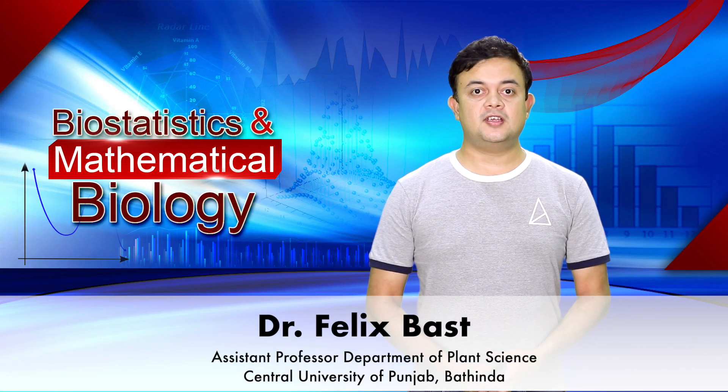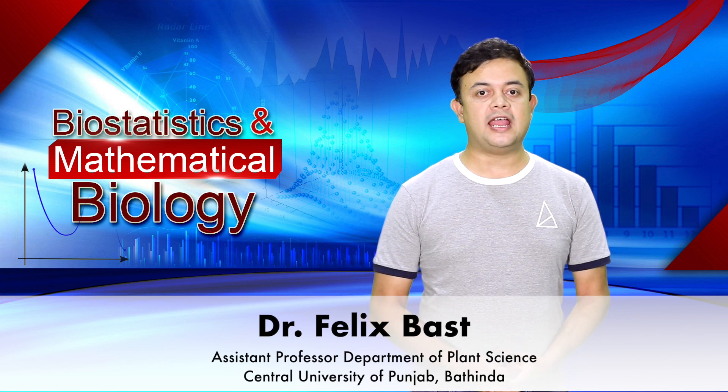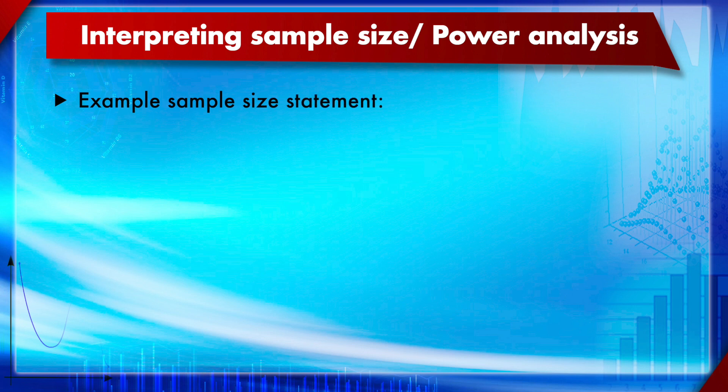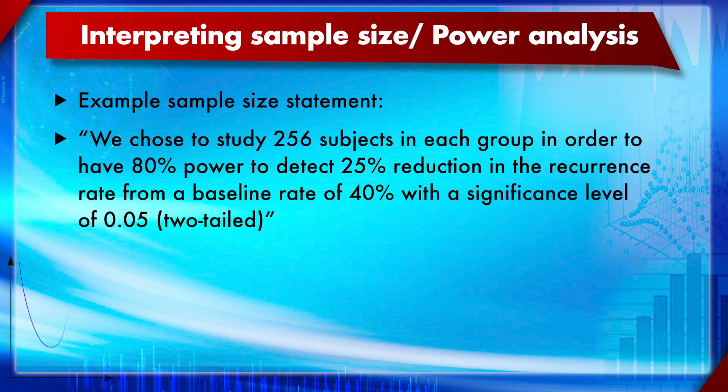Module 15: Statistical Power and Choosing the Right Sample Size. Section 2: Choosing the Right Sample Size. When you read a paper, you will see this kind of sample size statement in it. Let us read it: 'We chose 256 subjects in each group in order to have 80% power to detect a 25% reduction in the recurrence rate from a baseline rate of 40%, with a significance level of 0.05, two-tailed.'